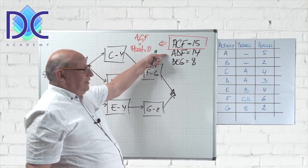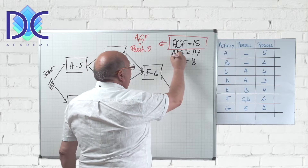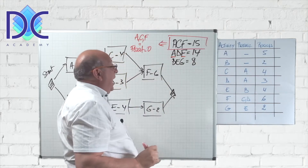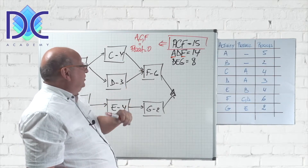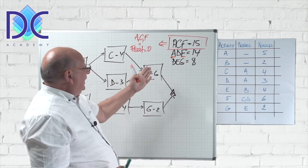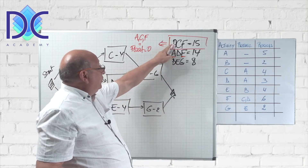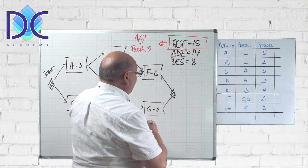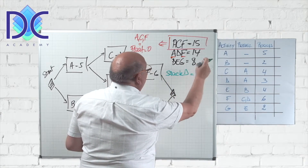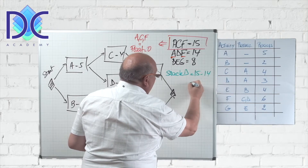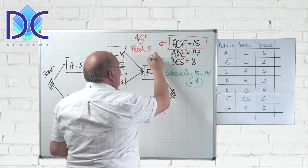When we look at the other path A–D–F, activities A and F are already on the critical path so their slack is zero. Now we need to find the slack of activity D. D is on the path with a duration of fourteen, and the critical path is fifteen, so the slack of D is fifteen minus fourteen, which equals one.